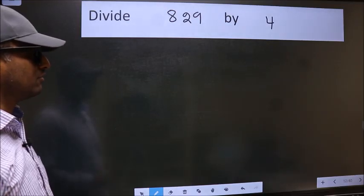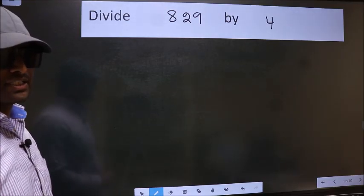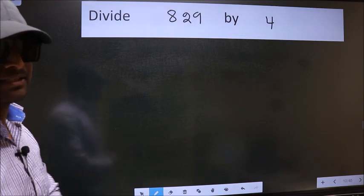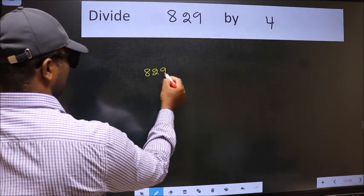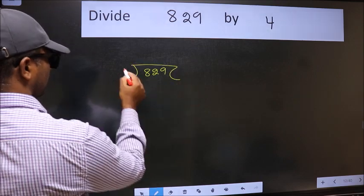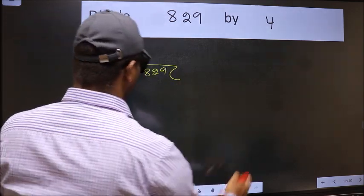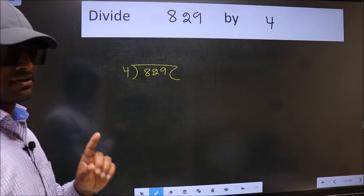Divide 829 by 4. To do this division, we should frame it in this way. 829 here and 4 here. This is your step 1.